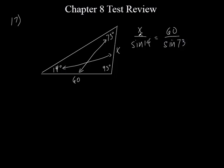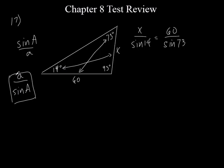With the law of sines, the book teaches sine of A over side A equals sine of B over side B. You can do it that way, or you can set it up with the side on top. I would pick based on what the variable is. If the side is the variable, put it on top so x is already on top — it makes it a little easier. You just have to be consistent: if the side goes on top on one ratio, it has to go on top on the other.